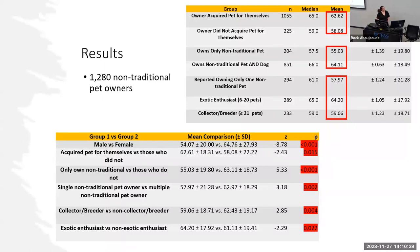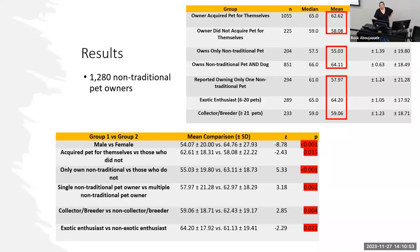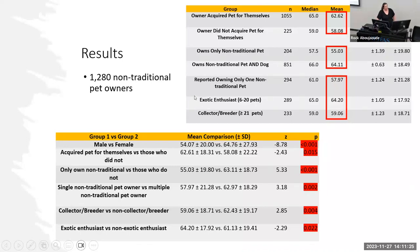Other interesting findings: owners of a non-traditional pet and a traditional pet — I looked at dogs and cats — had higher levels of attachment than those who only owned the non-traditional pet. And what I was really looking at was differences in attachment by number of pets owned. Individuals who owned only one non-traditional pet had the lowest level of attachment. Those with over 21 pets had the second lowest attachment. Those with six to twenty pets had the highest levels of attachment.